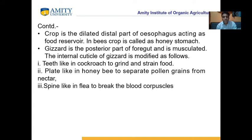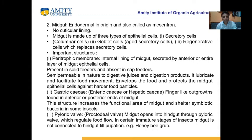The crop is the dilated distal part of the oesophagus, acting as a food reservoir. In bees, the crop is called the honey stomach. The gizzard is the posterior part of the foregut and is musculated. The internal cuticle of the gizzard is modified into three types: a teeth-like structure found in cockroach, a plate-like structure found in honeybee, and a spine-like structure found in fleas.